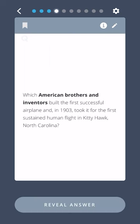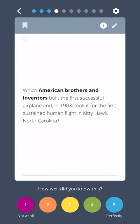Which American brothers and inventors built the first successful airplane and in 1903 took it for the first sustained human flight in Kitty Hawk, North Carolina? Orville and Wilbur Wright.